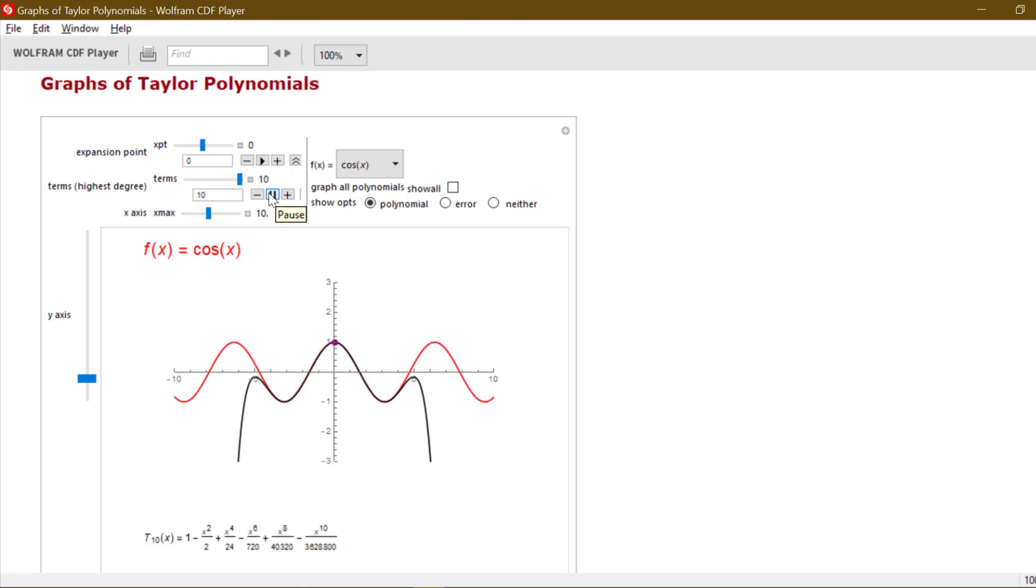So this is only going to go up to 10 terms, but I can imagine that as I would let n go to infinity, I would have an infinitely long polynomial that could actually be equal to this whole cosine curve.